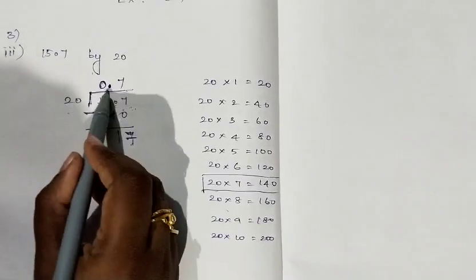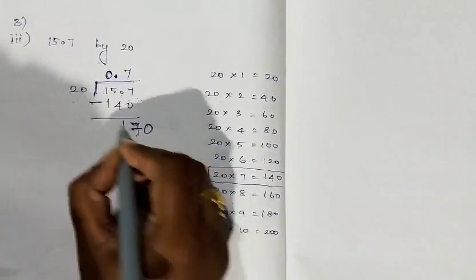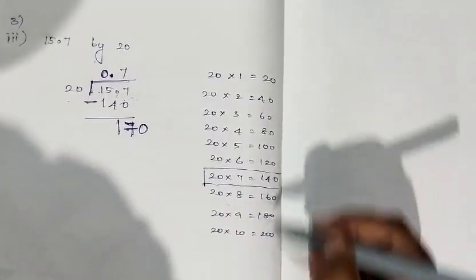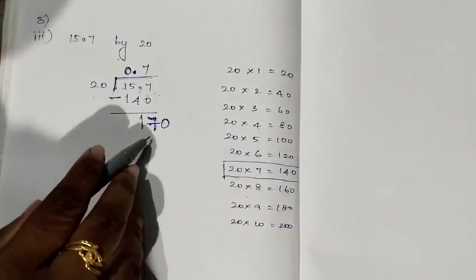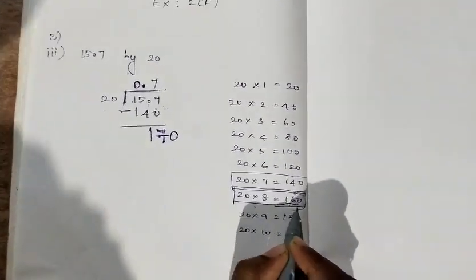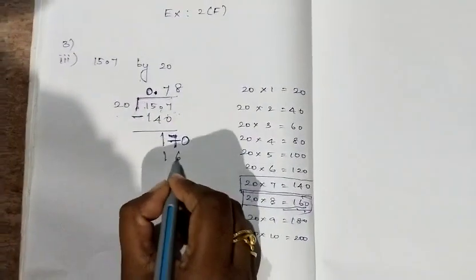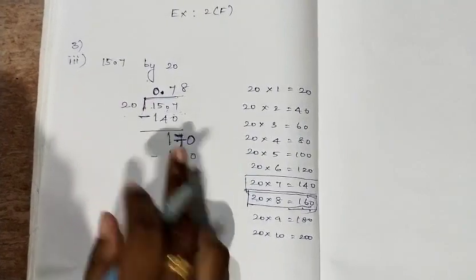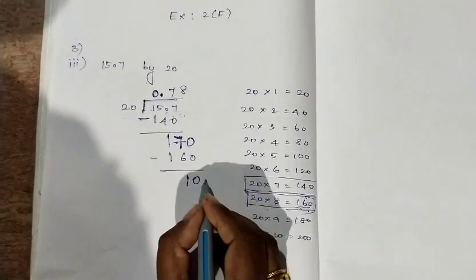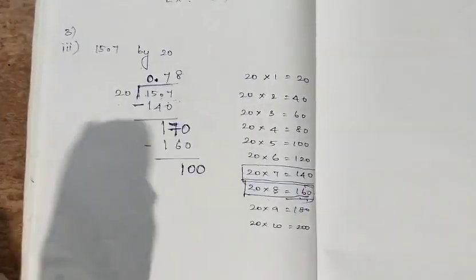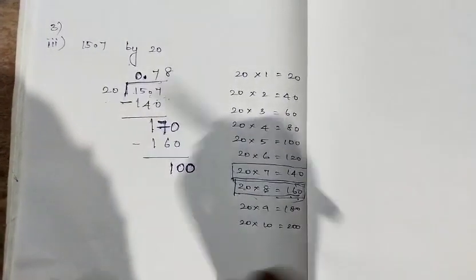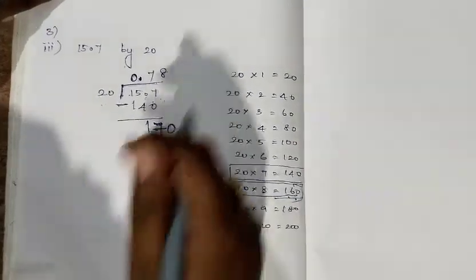We already have a point in the quotient, so we can add a 0. Next I am going to check if there is any 170 in the 20 times table. We are not having 170, so I am going to take 160, since 8 × 20 = 160. If I reduce 160 from 170 we will be getting 10. We can add a 0 here because 10 is not available in the 20 times table, and we are having a point, so we can add one more 0.